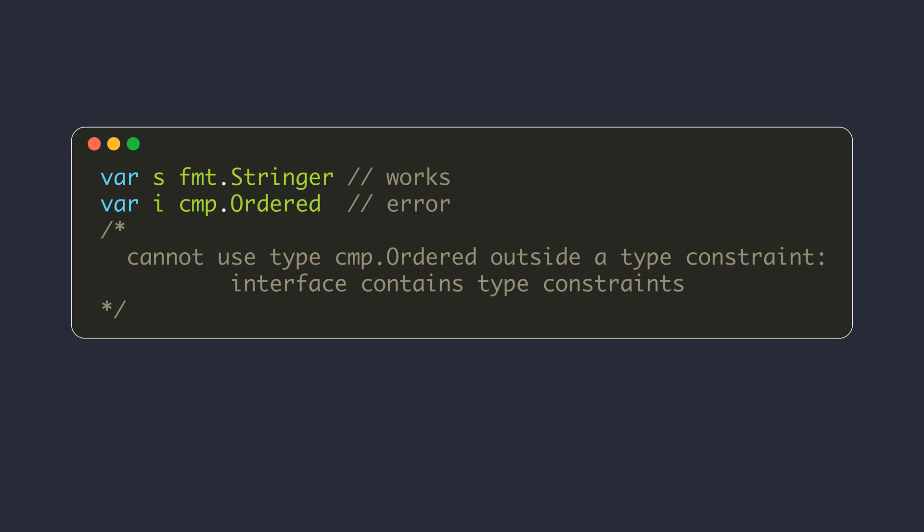Ordered types are any types that support less than, less than or equal to, greater than, and greater than or equal to operators — for example, integer data types. Interface types that may be used as value types, like the stringer interface, are called basic interface types. In this video, we will be focusing only on the basic interface types.